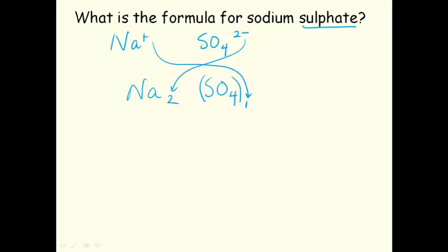Using the crisscross method, we can put in the subscripts for the compound that we're forming. But because there is only one sulfate ion, we can drop the brackets and forget about the one, because that's just not written. The formula for sodium sulfate is Na2SO4.